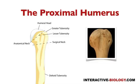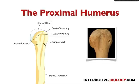Right between the humeral head and the tubercles is where we find the anatomical neck. It looks like the neck of the humerus, which just makes sense. However, we also have a surgical neck, and the reason why we distinguish that is because it's a very common place of breakage. When we have fractures and broken bones, this is a very common place, which is why surgeons refer to it as the surgical neck.